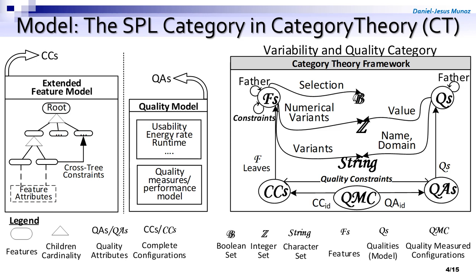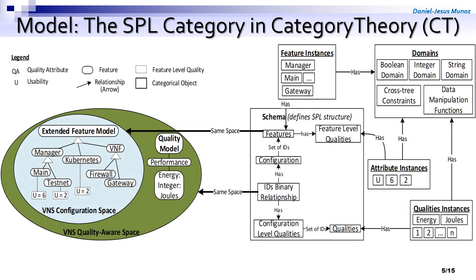How are they related together? By the quality measured configurations — that's the QMC object. Then, hierarchical relationships like parent. We can find a selection of Boolean features, numerical values of the numerical features, the name, domain, and so on of the features, the feature attributes, and the quality values.